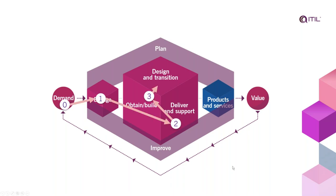On top of this model we can map a flow of work — a flow of information from demand to value. This flow is what ITIL 4 calls a value stream, similar in concept to value streams in Lean or DevOps. In ITIL we specifically say a value stream starts with demand and ends with value — you don't have a value stream that ends in between. For more detail on value streams, the 'Create, Deliver, Support' book of ITIL 4 has a great section dedicated to them.